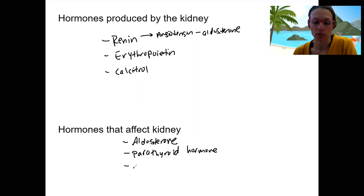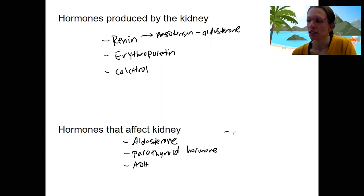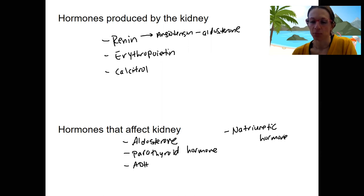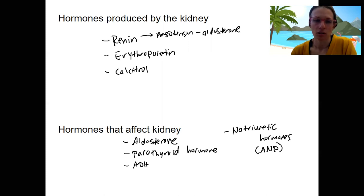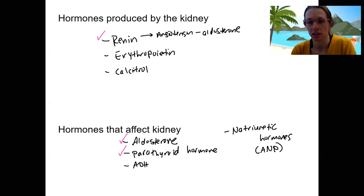Antidiuretic hormone is the one we'll talk about next — it handles water retention in the collecting duct. And natriuretic hormones, for example atrial natriuretic peptide, which responds to high blood pressure. We have covered renin, calcitriol, and parathyroid hormone. We will do ADH and ANP next.